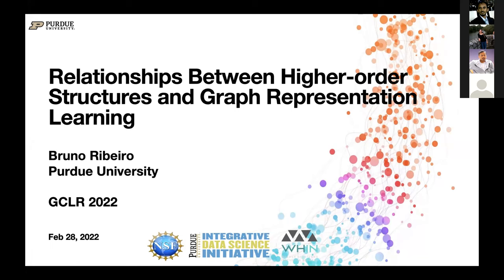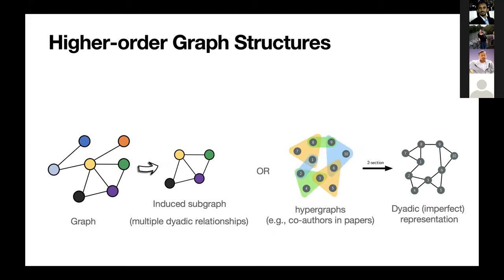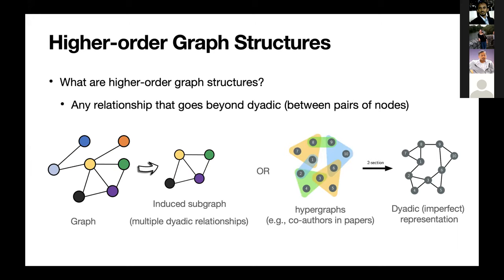I'm going to talk about some things I've been doing, and one common thread among these things is the use of hierarchy structures. There are interesting relationships between the notion of graph representation learning — using neural networks on graphs to predict properties of a graph — and higher-order graph structures. Higher-order structures go beyond dyadic relationships, where you have just two entities in the relationship.